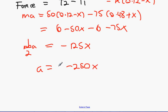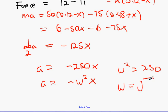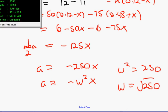And ma is going to equal minus 125x. Now what is m? m is 0.5 so that's going to be a half. a equals minus 125x. a therefore equals minus 250x. This is simple harmonic motion because the acceleration is in the opposite direction to the displacement. a equals ω²x. ω² equals 250. ω therefore equals the square root of 250 and that's why it's simple harmonic motion.